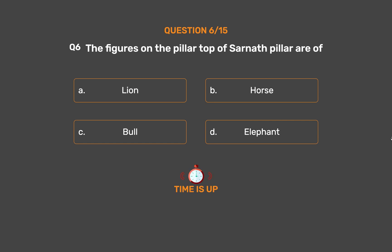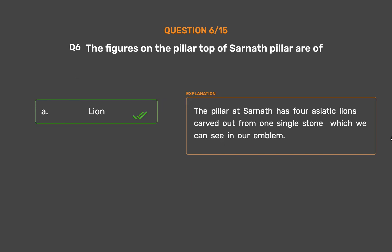The correct answer is Option A: Lion. The pillar at Sarnath has four Asiatic lions carved out from one single stone, which we can see in our national emblem.